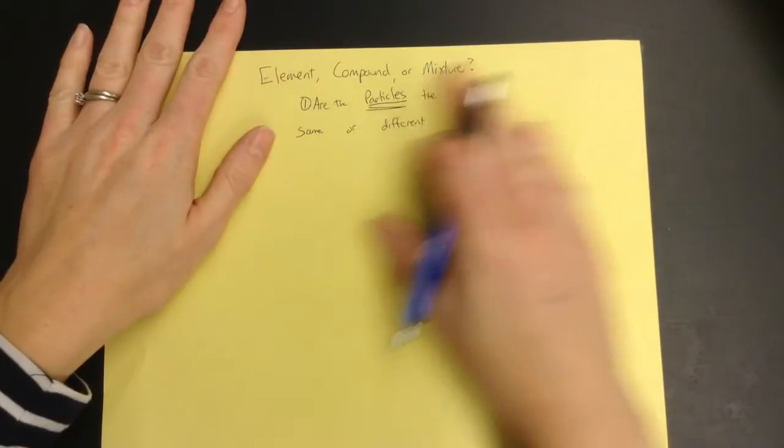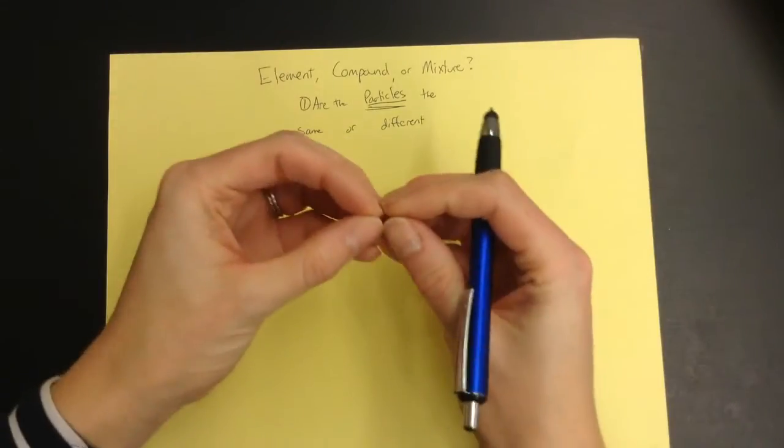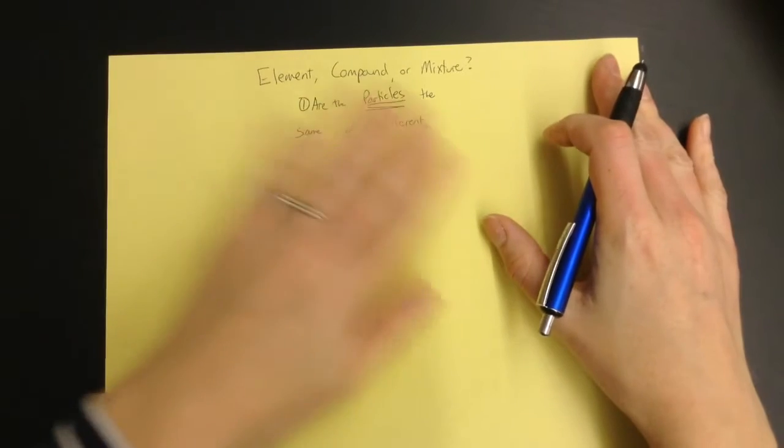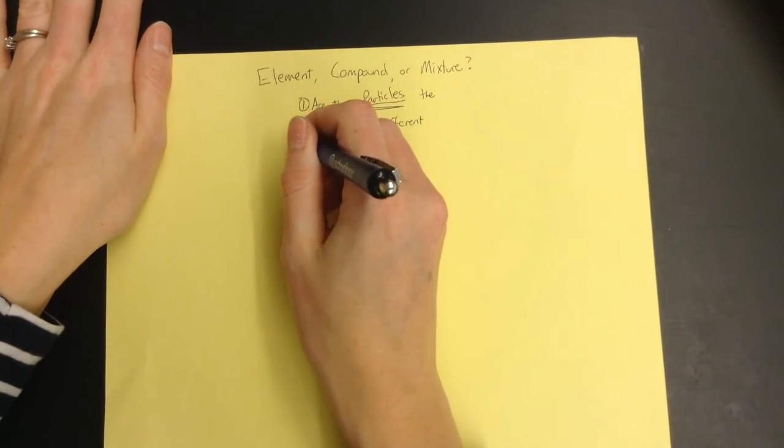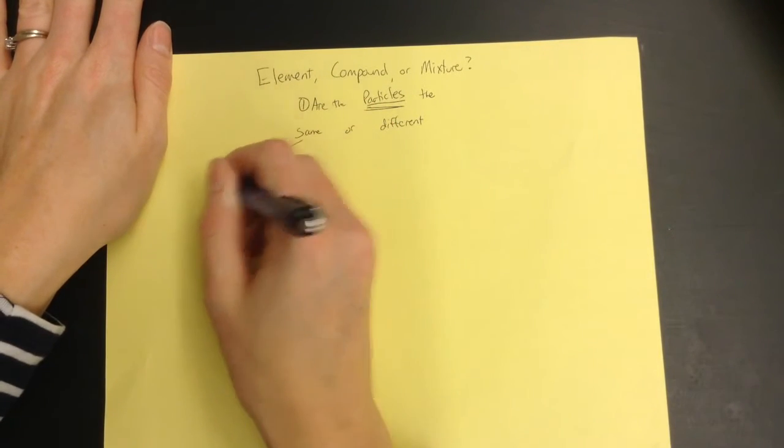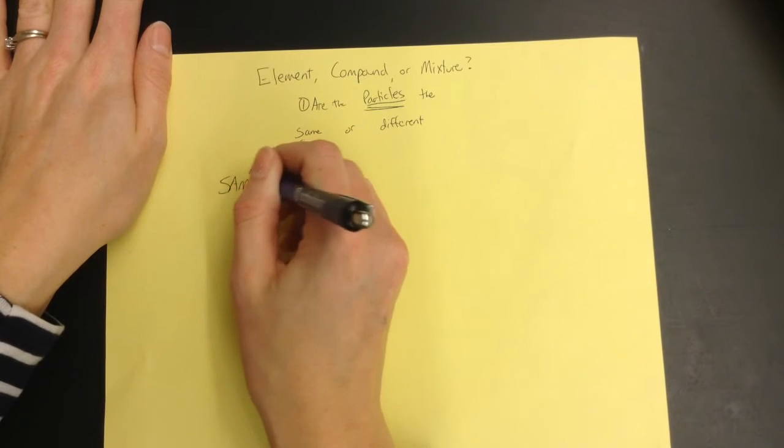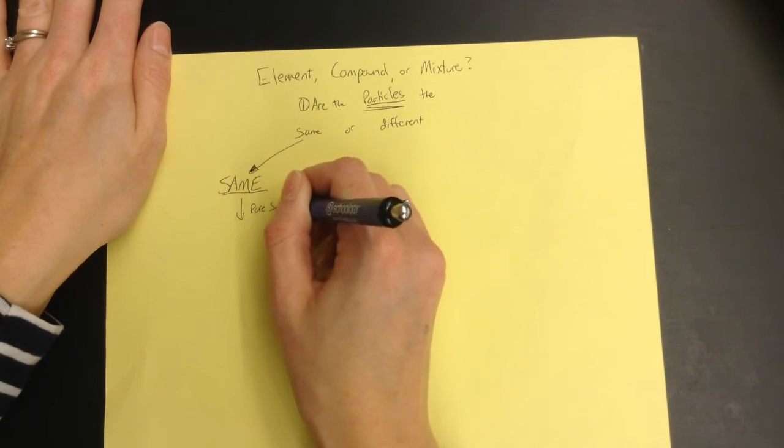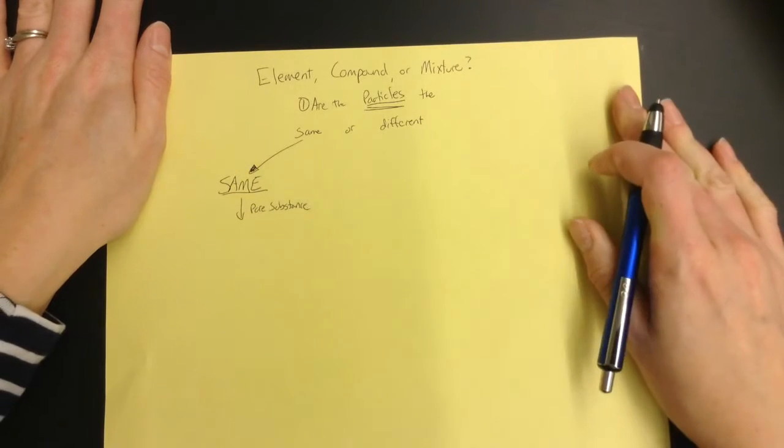So the first question is, are the particles the same or different? And they can be turned, but as long as they have the same set of stuff in them, then they're the same. If they are the same, then they are what is called a pure substance, because that's what a pure substance is.